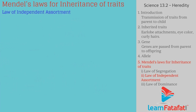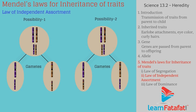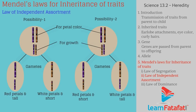The second law states that during the formation of gametes, different allele pairs separate independently. Thus, the pair of alleles responsible for petal color segregates independently of the allele pair responsible for growth.